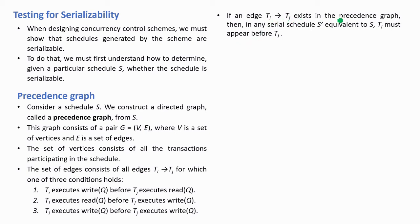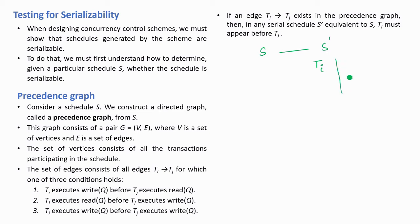If an edge from ti to tj exists in the precedence graph, then in any serial schedule s-dash equivalent to s, ti must appear before tj. So in the serial schedule s-dash, all operations of ti will be before the operations of tj.